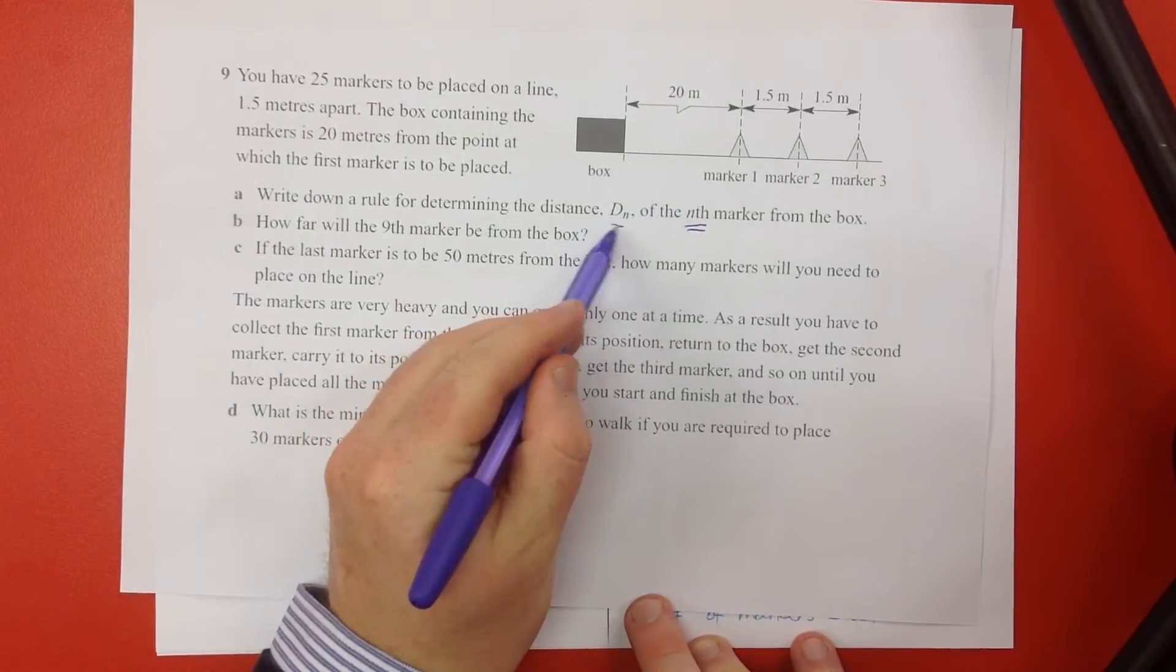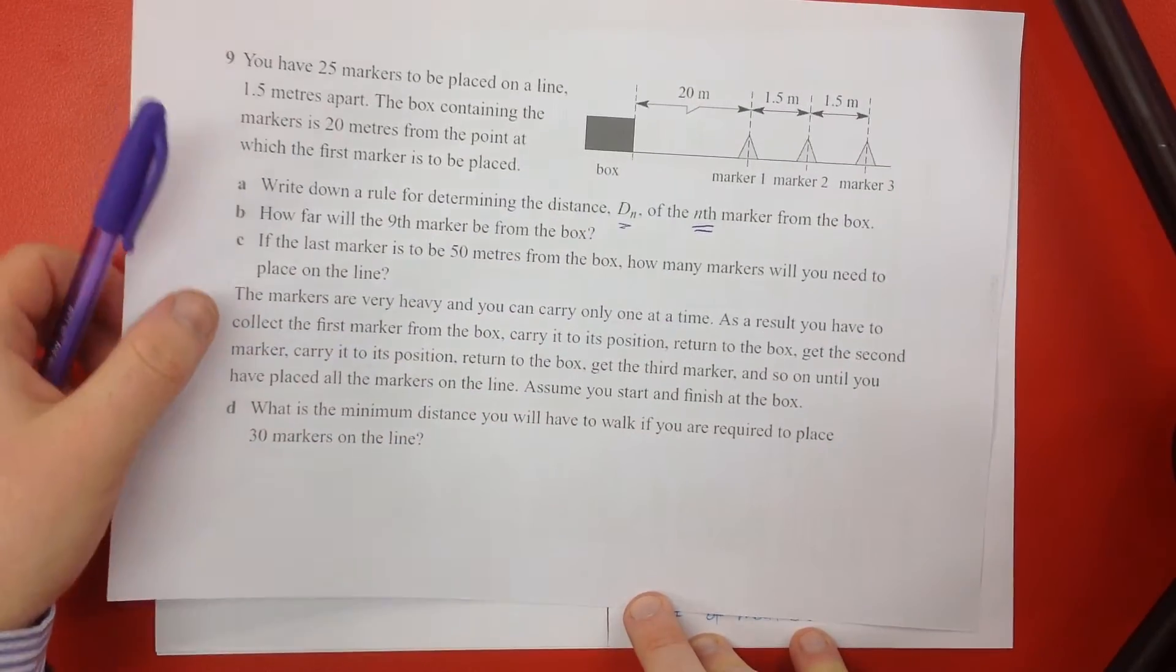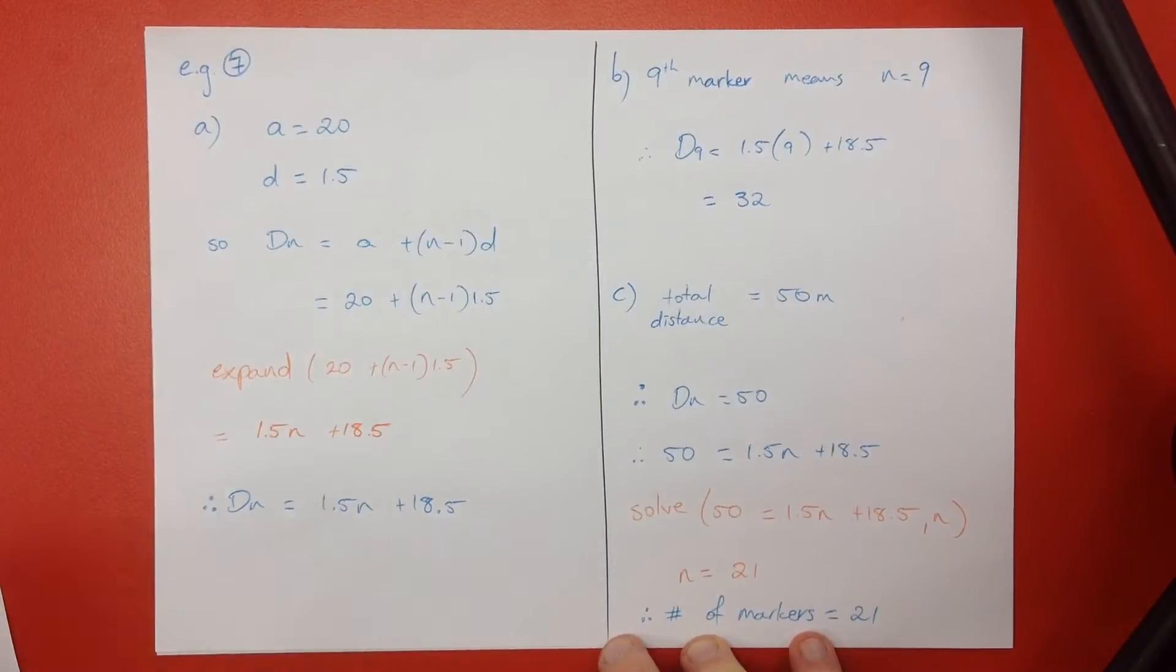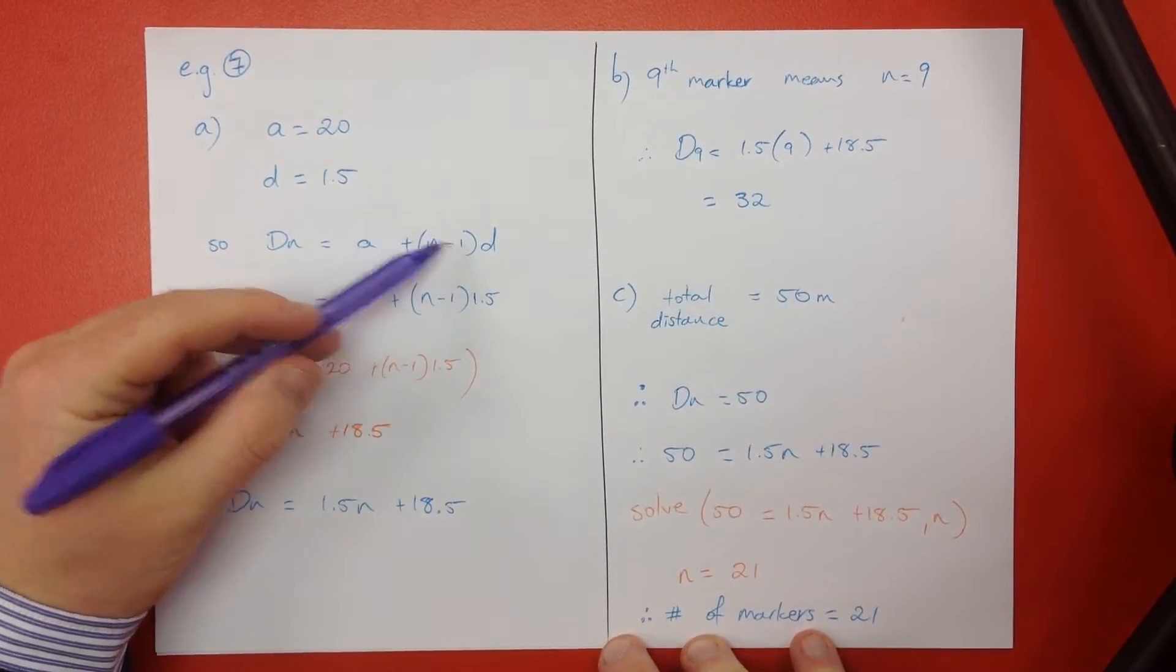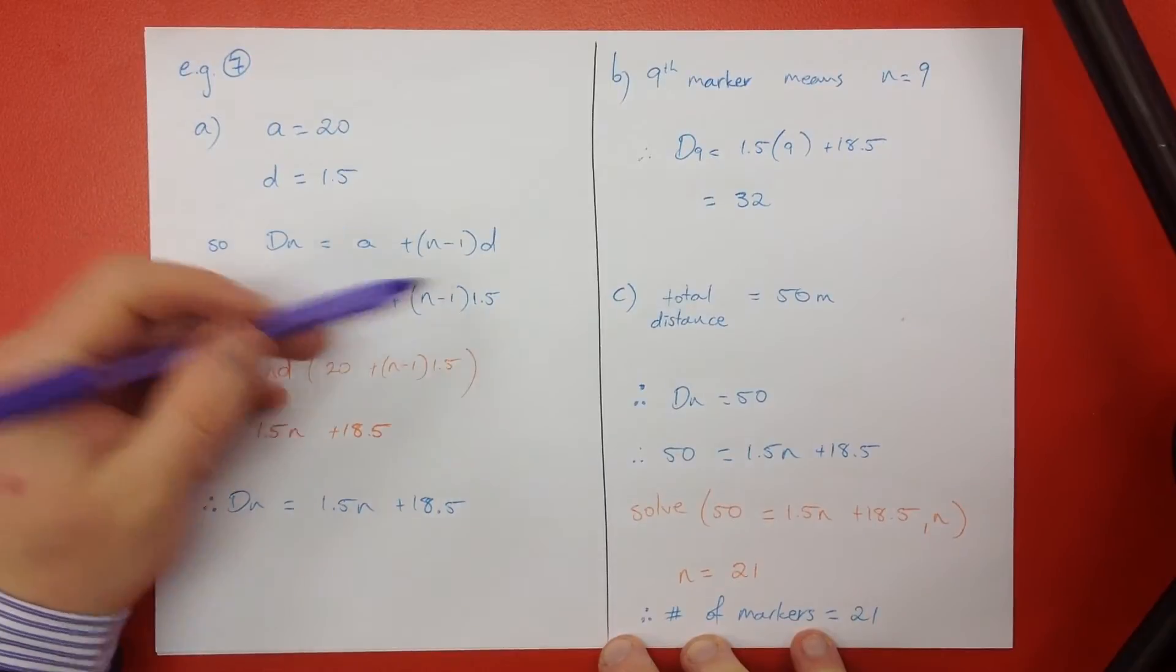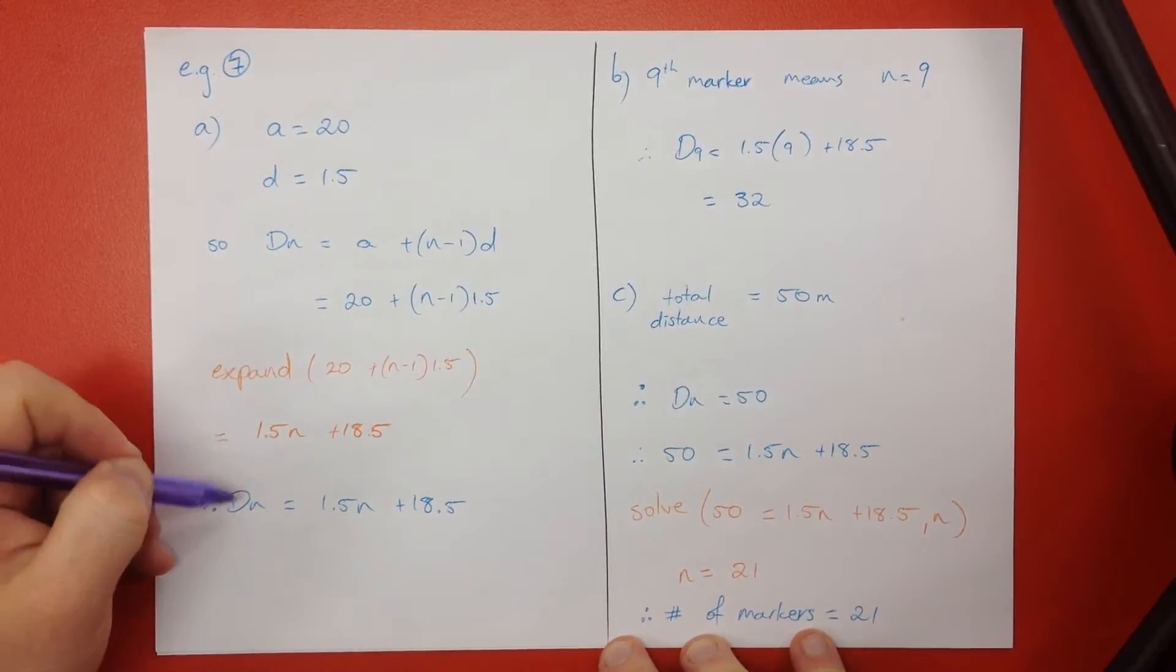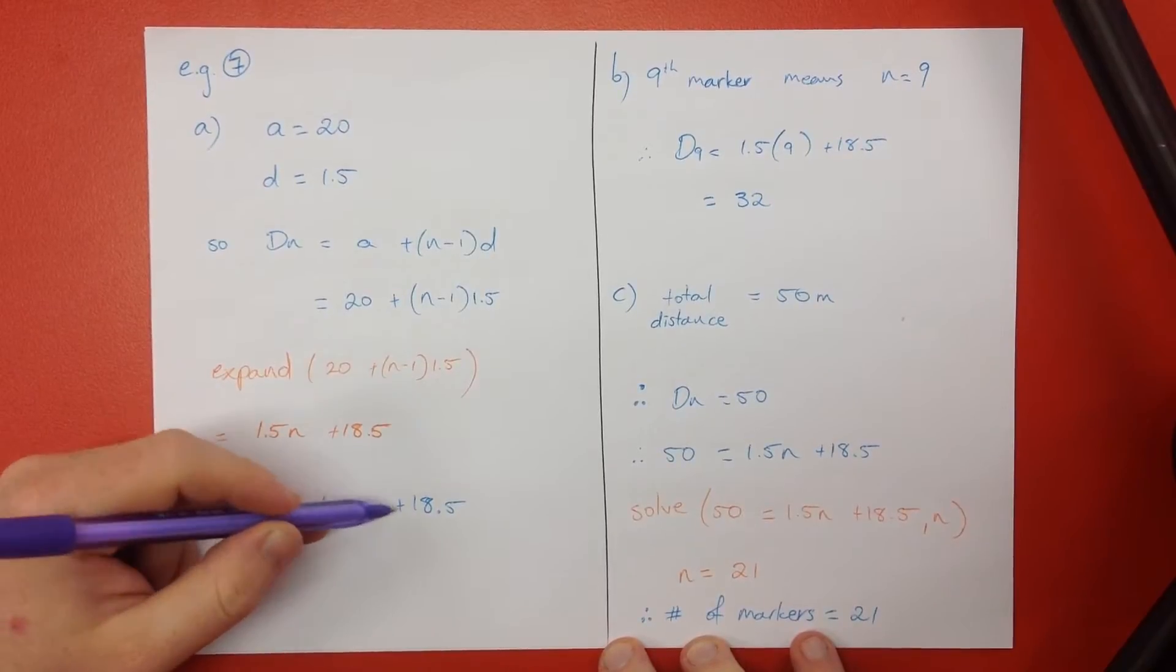You can see that's in the question, just there. Usually we'd use t of n, but it's asking for the distance, so we'll go d of n. So d of n equals a plus n minus 1d, that's the formula. And then we put in our blanks, we use our calculator to expand it, and that tells us our general formula is 1.5n plus 18.5.